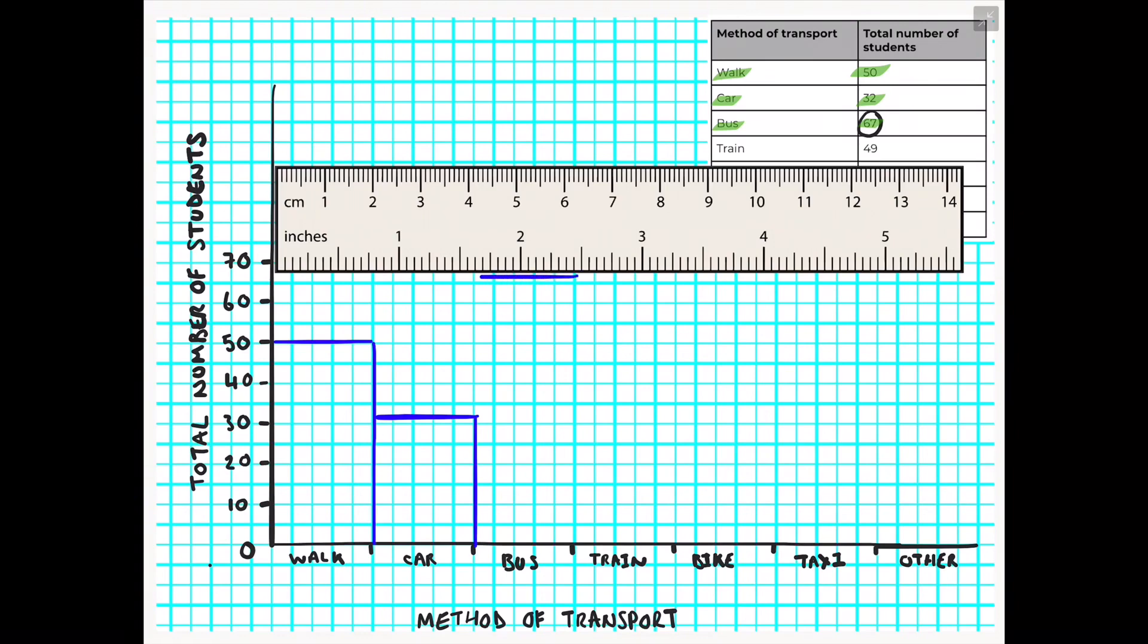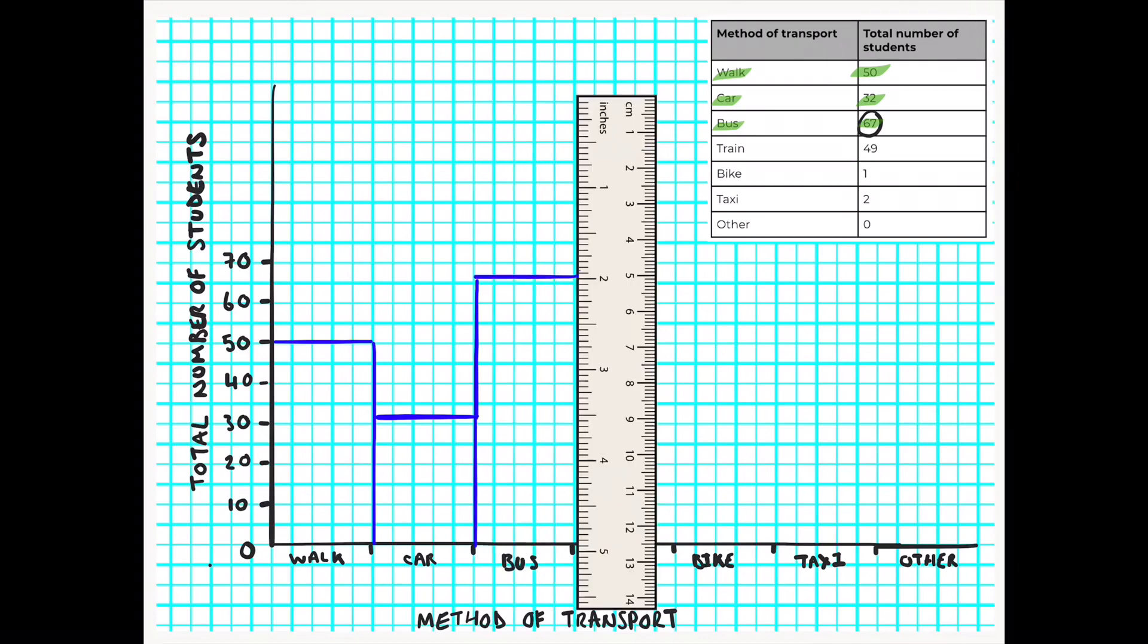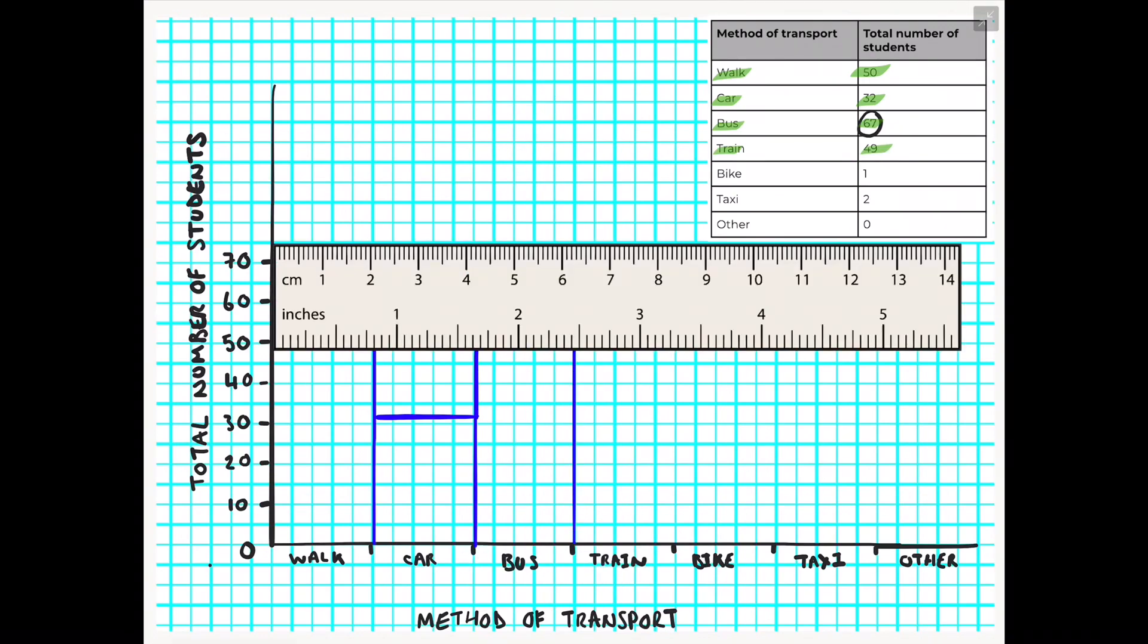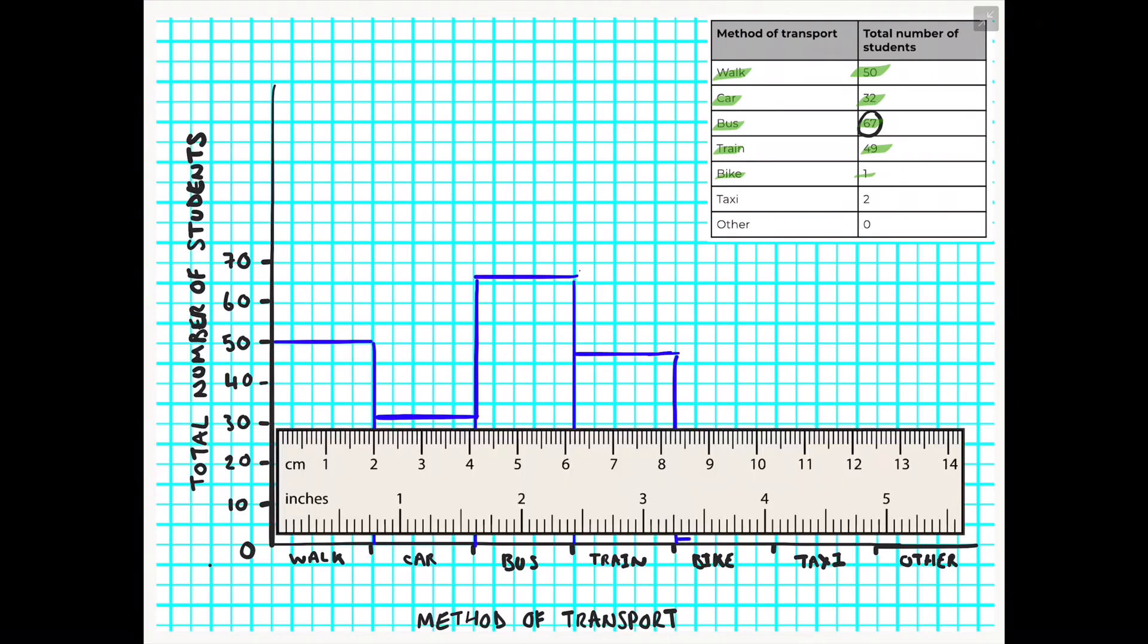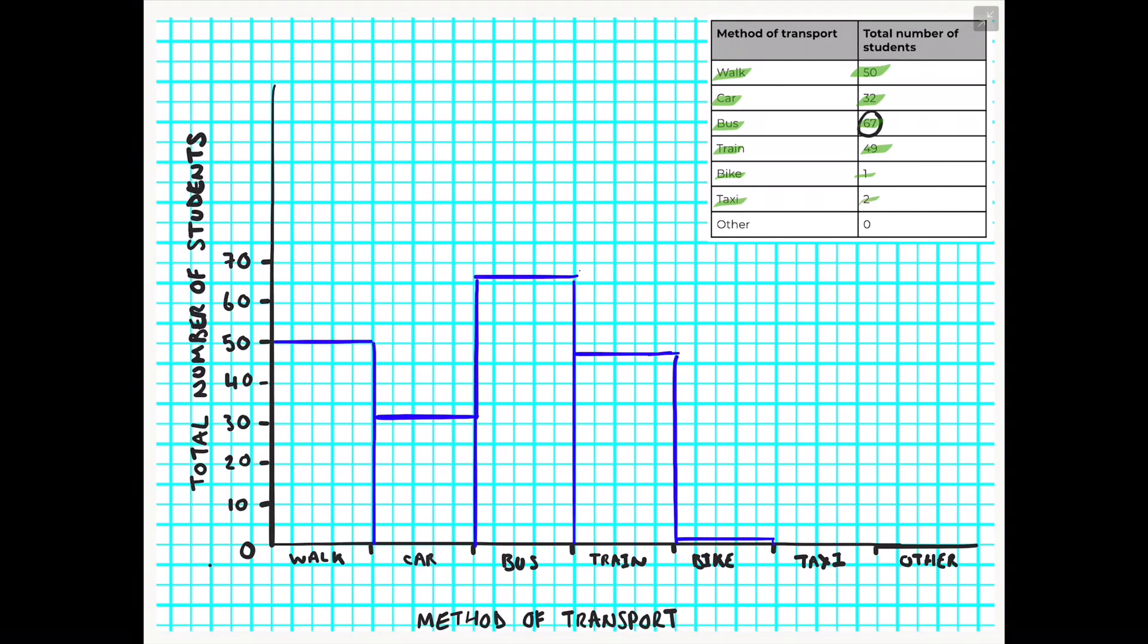We will then continue this process for bus, the train, constantly using that ruler to ensure we've got straight, accurate lines for our bars. And obviously our other category is empty so it does not need a bar drawn for that one.